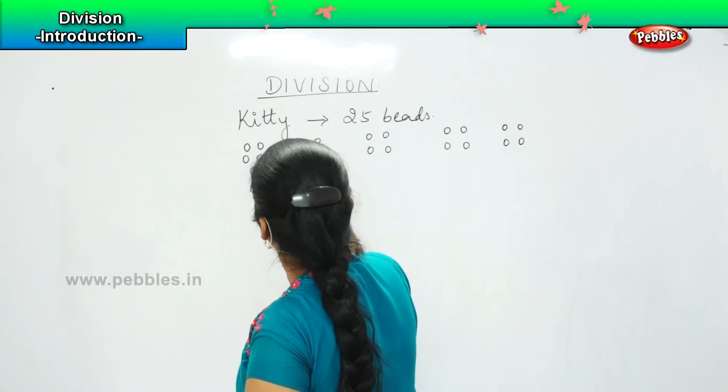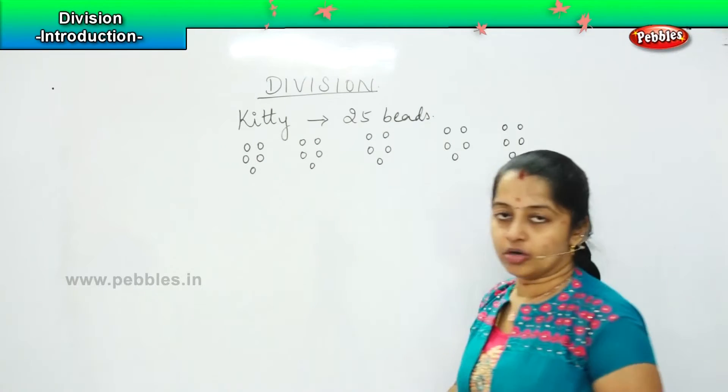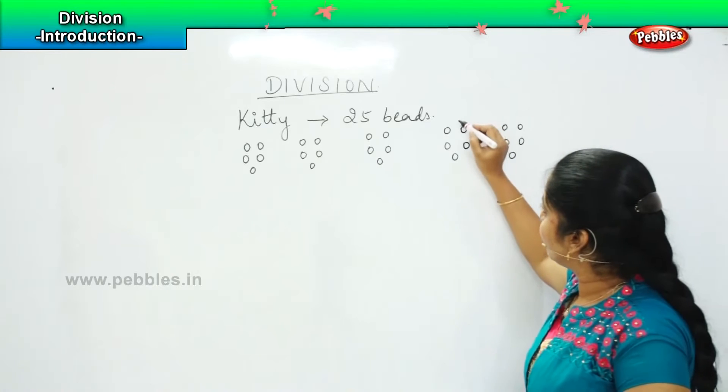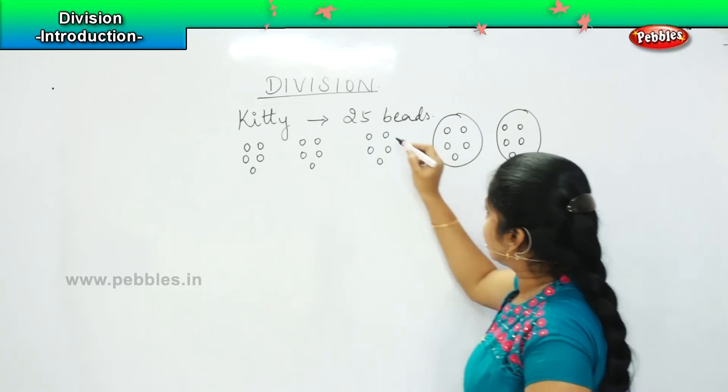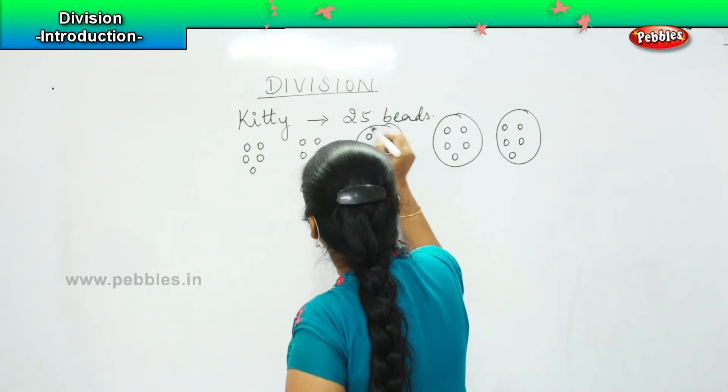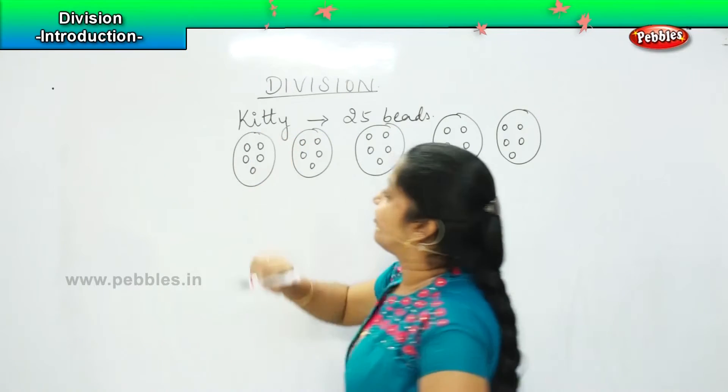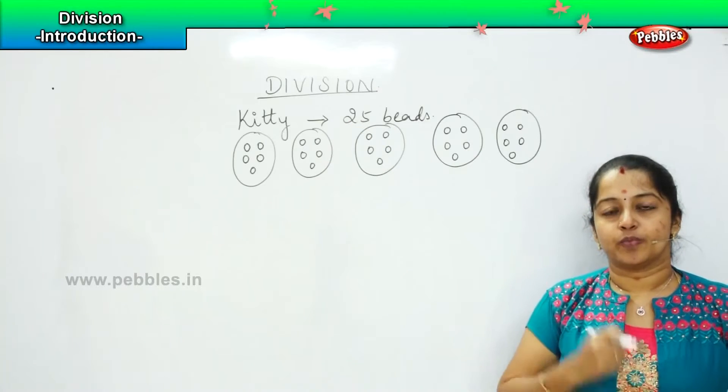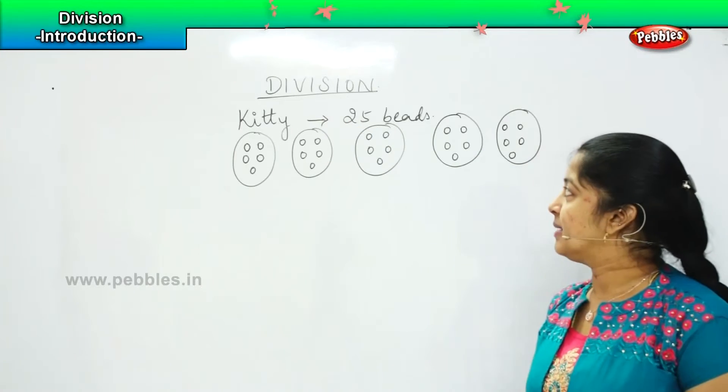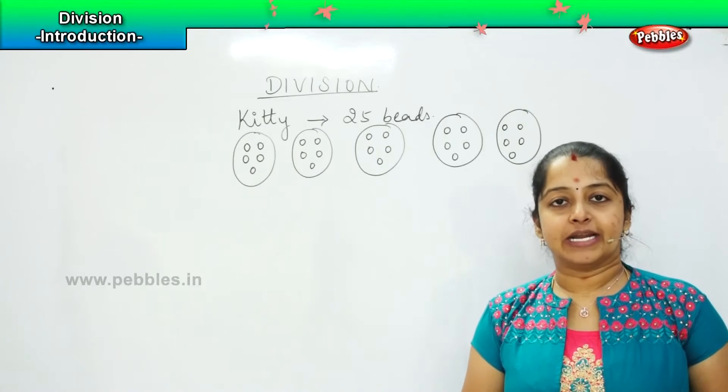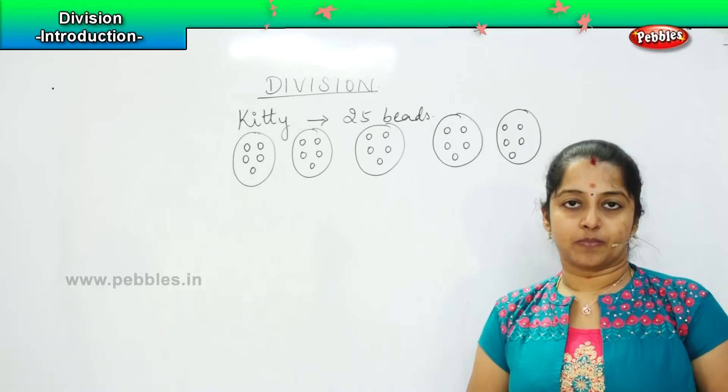And if she distributes the 5 equally among these 5 groups, then the beads are equally divided. So what she will do? She will add 1 bead more in each of her lot. So if you see, she is having a small box in which she has divided the entire 25 beads equally so that if any of her friends come in, she can just take that one group and she can gift it to them.